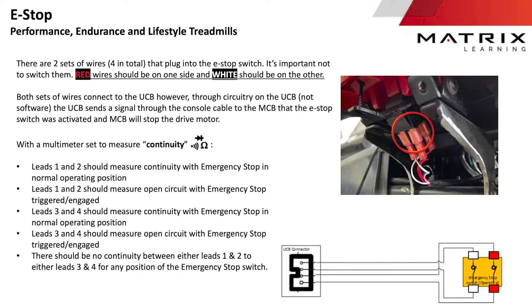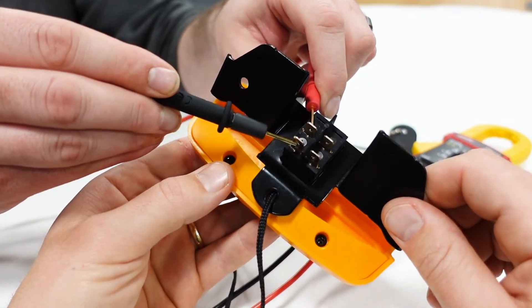How to test emergency stop switch. There are two pairs of wires that plug into the e-stop switch. You can test audible continuity on each of the pairs of the switch.